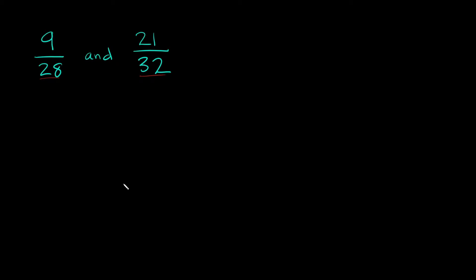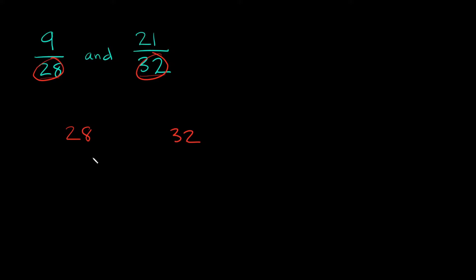So this is kind of like a three-step process. Step number one is going to be finding the prime factors of your denominators, 28 and 32. In order to do that I'm going to use the factor tree method.